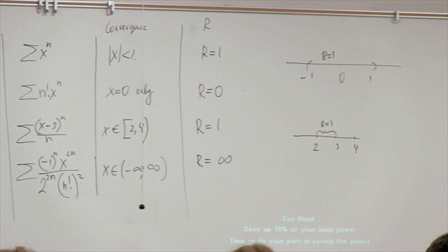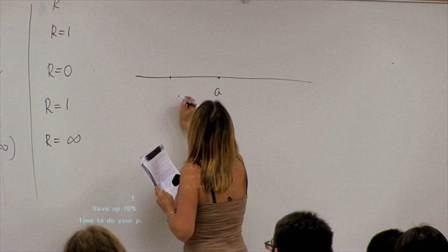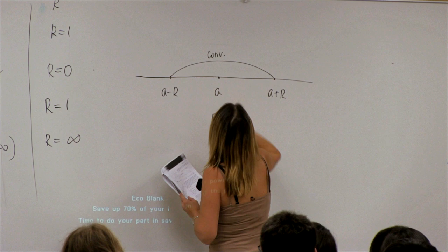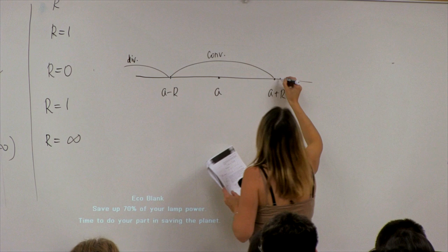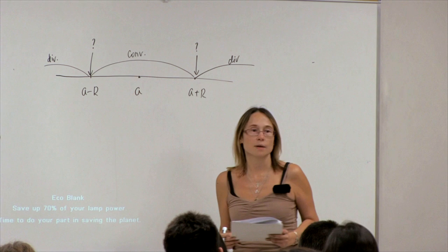Let me draw the general picture. For any power series, we have center a, with a−r on the left and a+r on the right. Everywhere inside this interval we have convergence, everywhere outside is divergence. The two endpoint values can either be convergent or divergent.